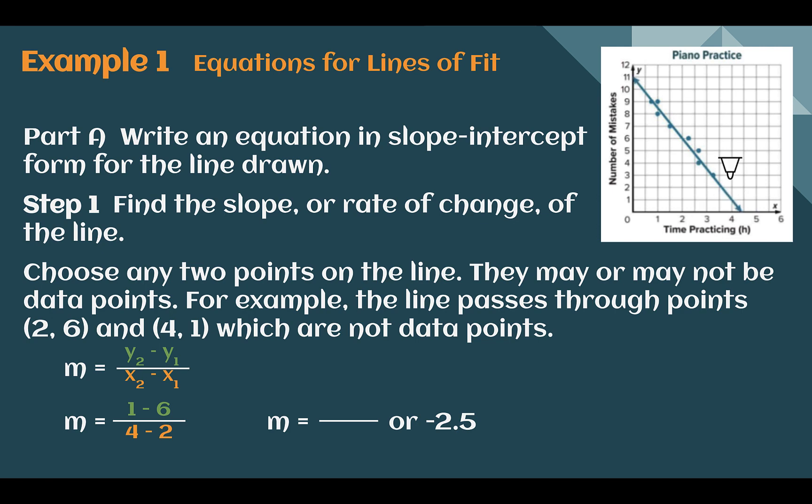Let's find the slope. We can pick any two points on the line. Again, they do not have to be the data points that are there. If I look closely, the line here passes through almost perfectly at 2, 6 and again at 4, 1. So those would probably be the best points to choose to figure out my slope.